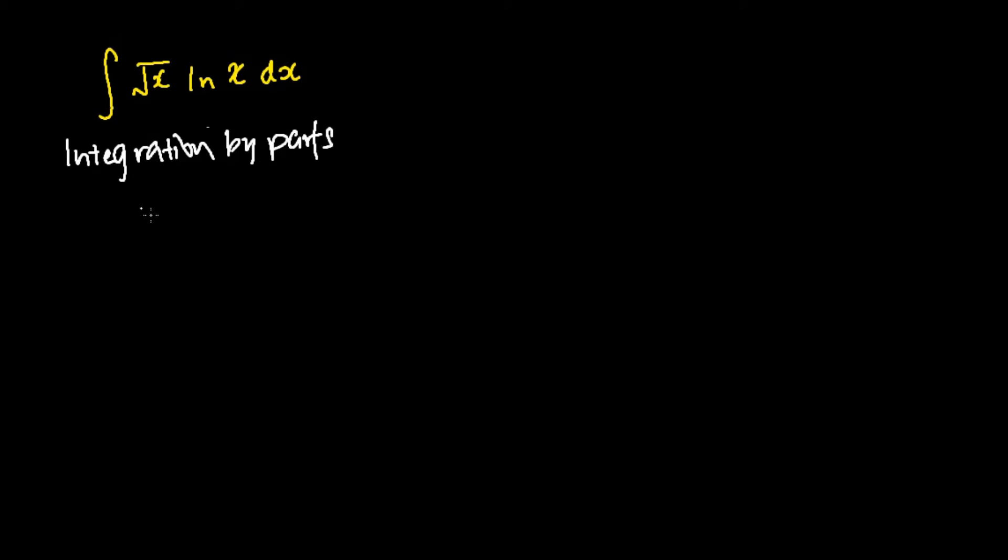Integration by parts tells us that if I were to let a term as u and the other term as dv, this equals u v minus the integral of v du, where to find my v I will integrate dv and to find my du I will differentiate u.